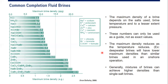Generally speaking, mixtures of brines can achieve higher densities than single salt brines. For example, a combination of sodium chloride and potassium chloride can achieve a maximum brine density of 10 ppg, whereas single KCl is only 9.6 ppg and single sodium chloride is only 9.9 ppg. Combining two salts achieves a higher maximum brine density.